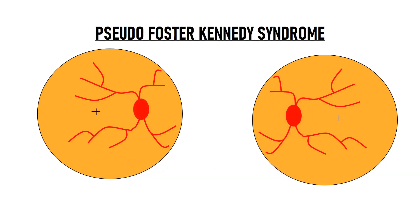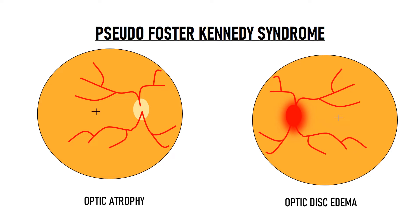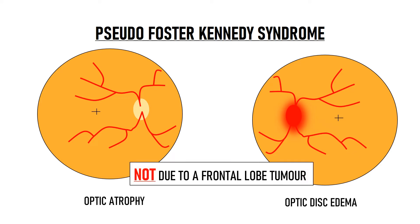What happens in pseudo Foster Kennedy syndrome? In pseudo Foster Kennedy syndrome, the patient again has optic atrophy in one eye and optic disc swelling in the other eye. But here, the reason behind this is not a frontal lobe tumor.